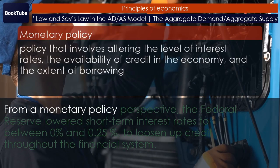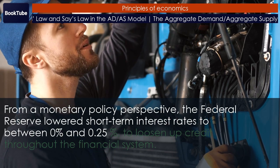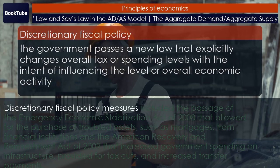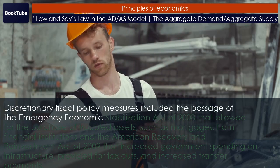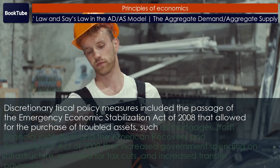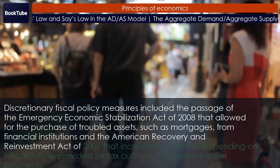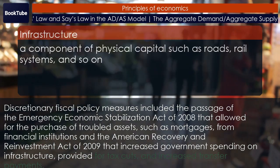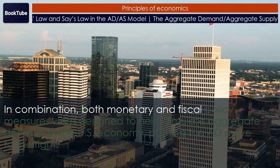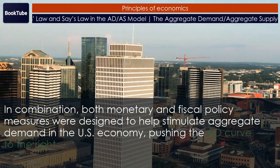Understanding the source of these macroeconomic fluctuations provided monetary and fiscal policy makers with insight about what policy actions to take to mitigate the impact of the housing crisis. From a monetary policy perspective, the Federal Reserve lowered short-term interest rates to between 0% and 0.25% to loosen up credit throughout the financial system. Discretionary fiscal policy measures included the passage of the Emergency Economic Stabilization Act of 2008, which allowed for the purchase of troubled assets such as mortgages from financial institutions, and the American Recovery and Reinvestment Act of 2009, which increased government spending on infrastructure, provided for tax cuts, and increased transfer payments. In combination, both monetary and fiscal policy measures were designed to help stimulate aggregate demand in the US economy, pushing the AD curve to the right.